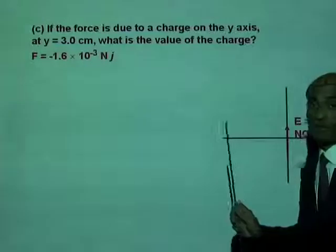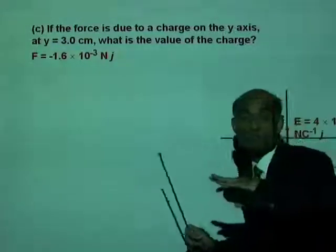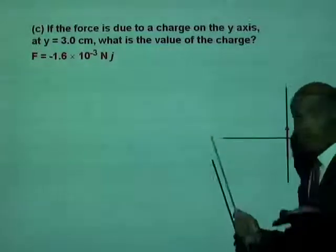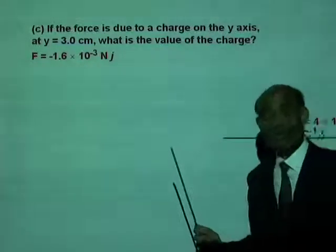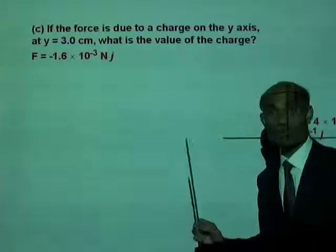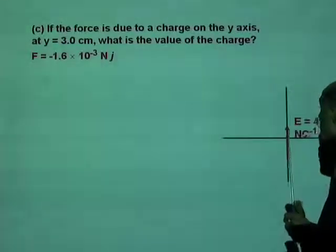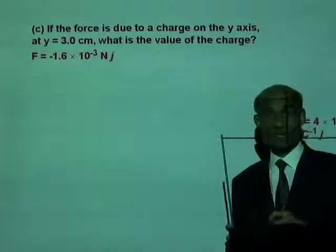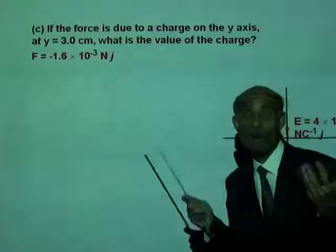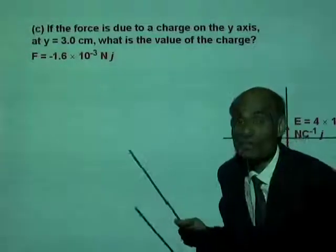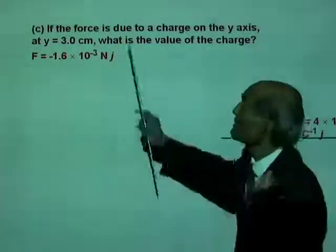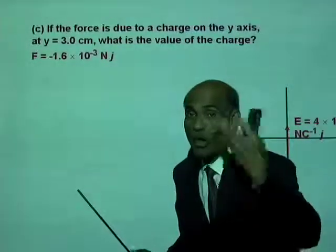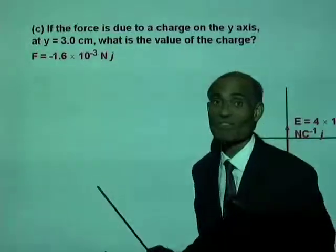We have now removed the 2 nanocoulomb and also the 4 nanocoulomb, but there is an electric field existing at the origin. We don't know who causes that field. For part C, we want to find out what causes that field.